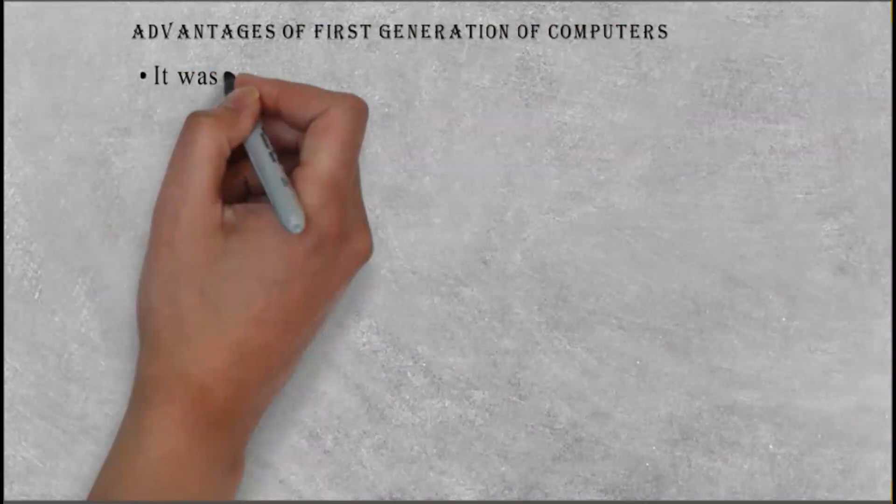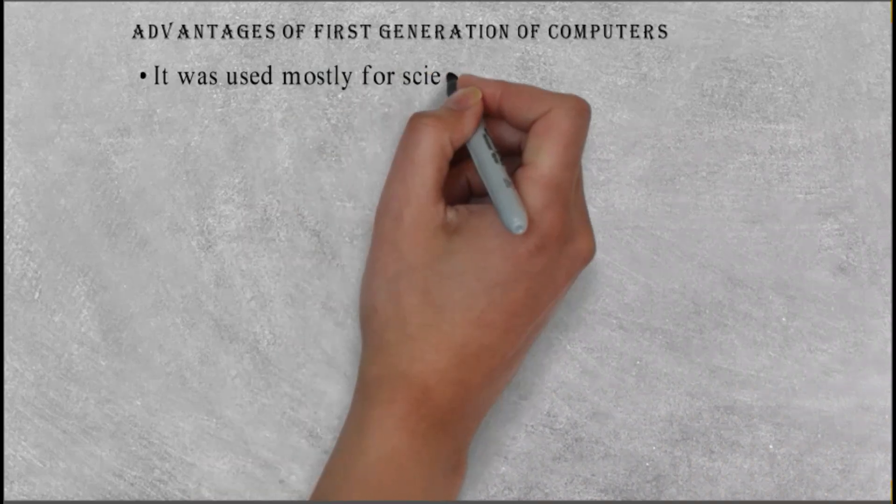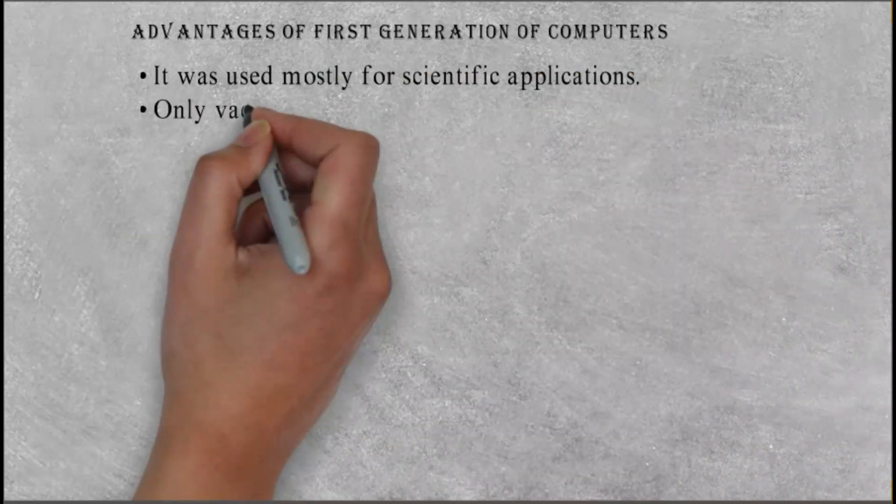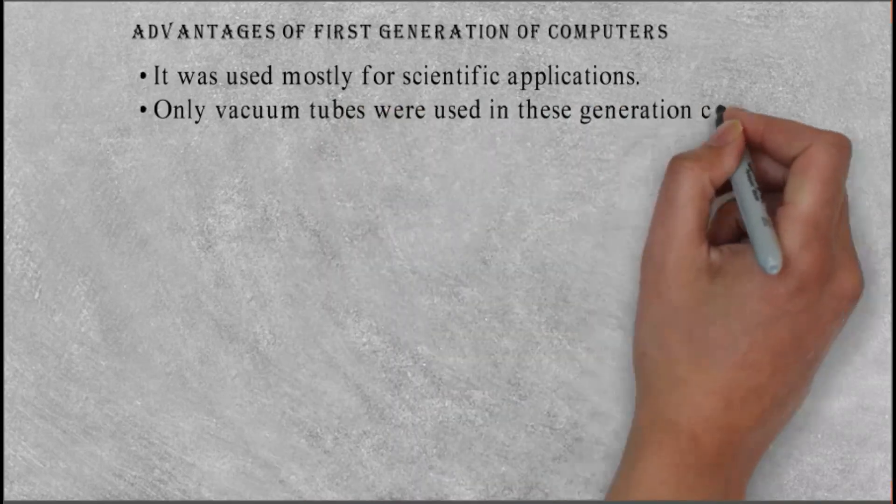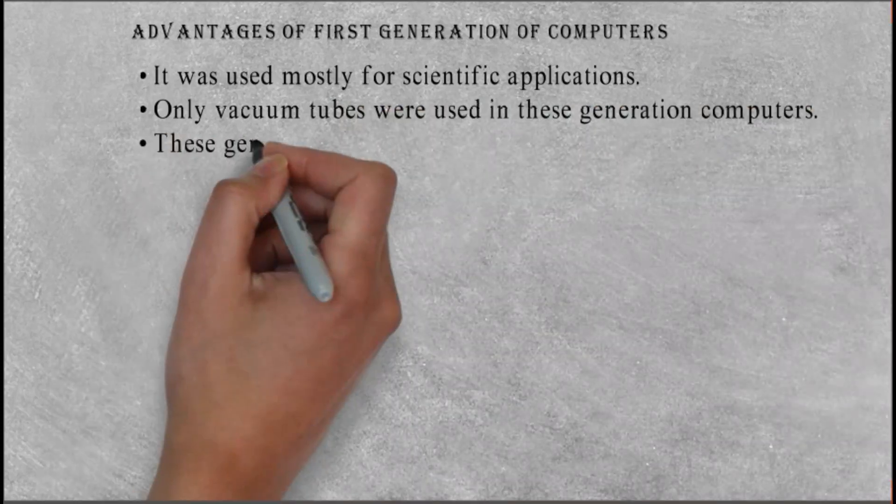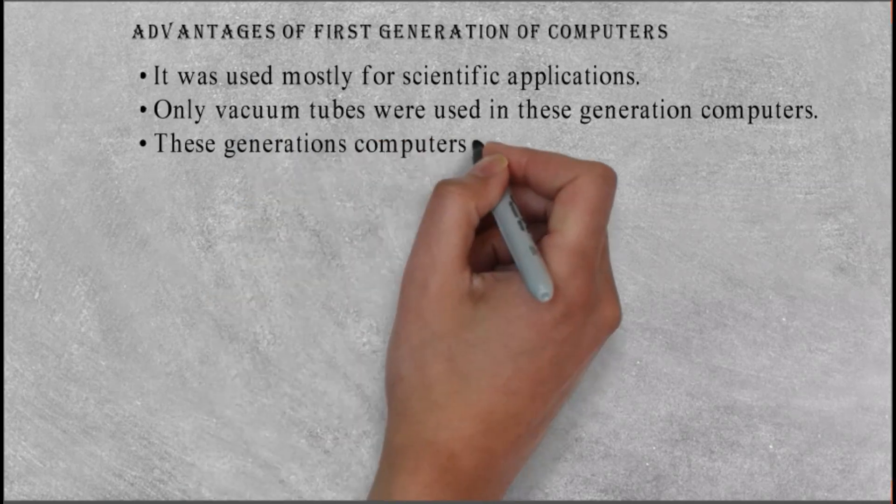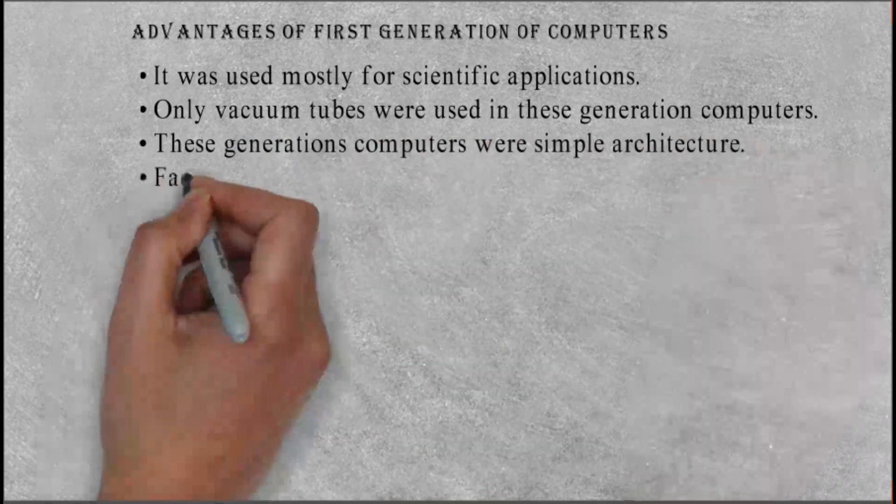Advantages of first generation of computers: It was used mostly for scientific applications. Only vacuum tubes were used in these generation computers. These generation's computers were simple architecture. Facility for storing information.